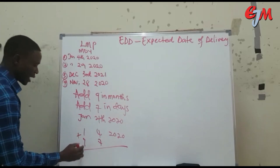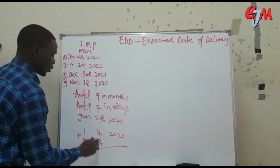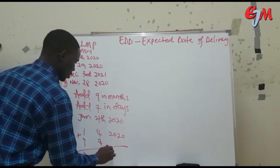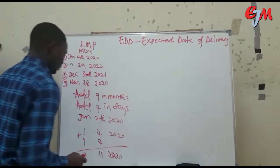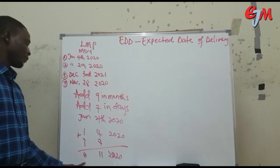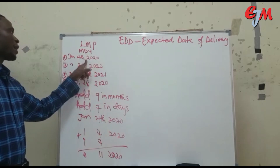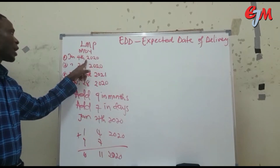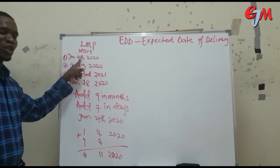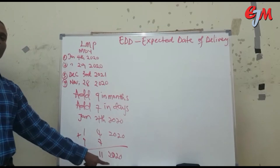So, 1 plus 9 gives you 10 for the month, and 4 plus 7 gives you 11 for the day, and the year remains 2020. Month 10 is October, so the result is October 11, 2020. If you are pregnant and your last menstrual period was January 4th, you should be expecting your delivery on the 11th of October.